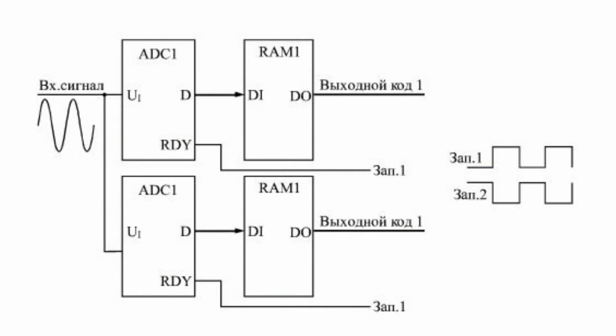For example, even samples of the input signal are processed by one ADC with its buffer and the odd ones by the other ADC with its buffer. As a result, memorizing of the input signal codes is done with twice the frequency of conversion of each ADC. For example, if each ADC and each buffer run at 10 MHz, the resulting conversion frequency is 20 MHz.